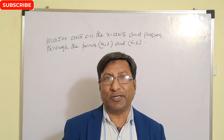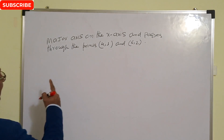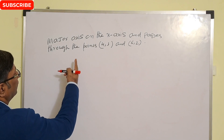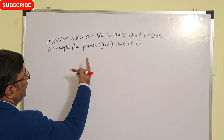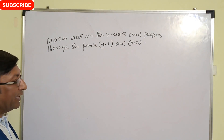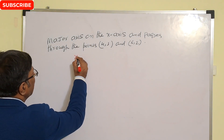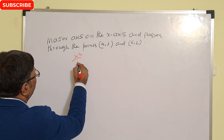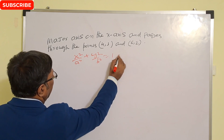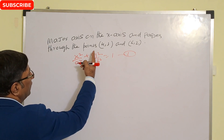This is an important question on ellipses. The major axis is on the x-axis and the ellipse passes through the points (4,3) and (6,2). Since the major axis is on the x-axis, a will be greater, and the standard equation is x² upon a² plus y² upon b² equal to one — this is our first equation.